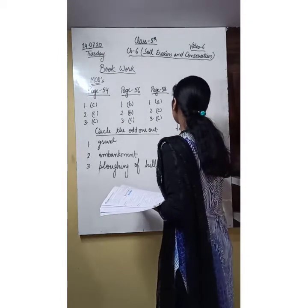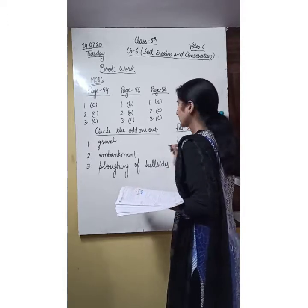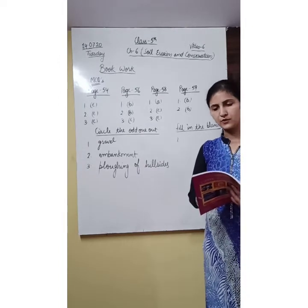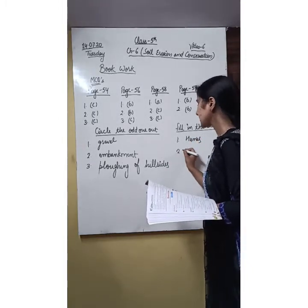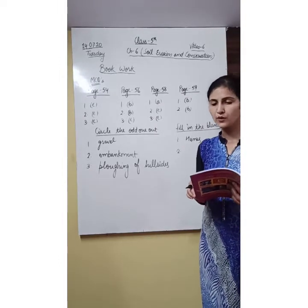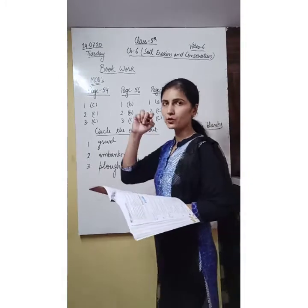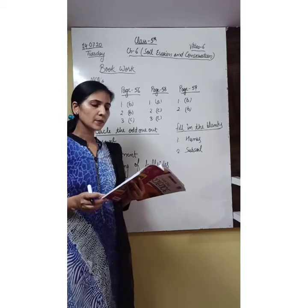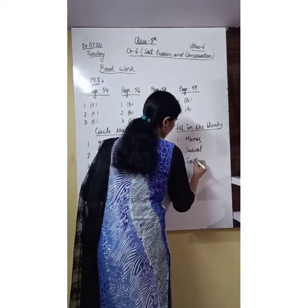Now it's time for fill in the blanks. First: blank makes the soil fertile — moisture or humus? Its answer will be humus, as we discussed many times in this chapter. Next: the roots of trees reach the layer called — subsoil or bedrock? Its answer will be subsoil; trees grow in topsoil but roots can reach up to subsoil. Next: the uppermost layer of the earth is called — soil or core? Its answer will be soil.